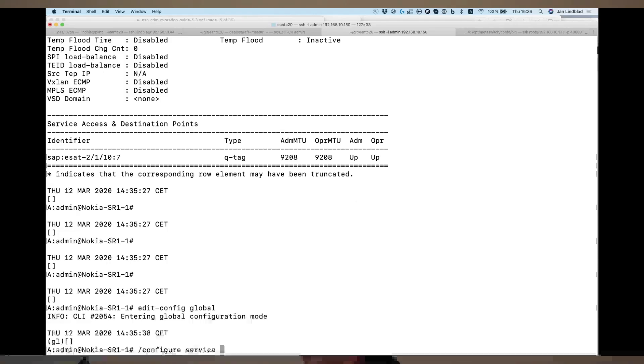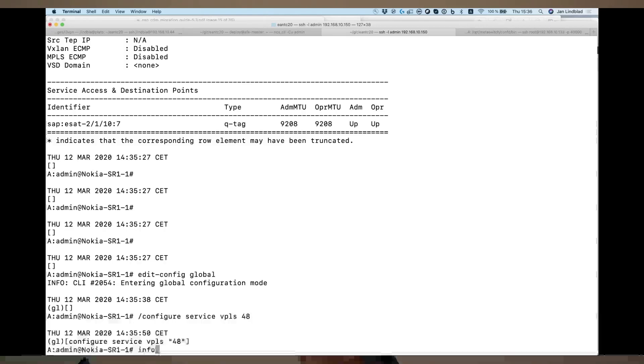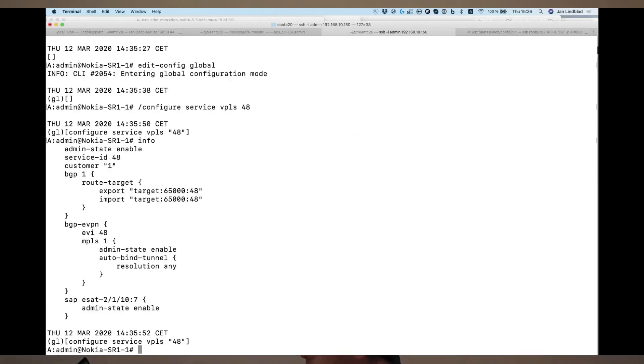And we can see the configuration that has been provided matches that that we anticipated on the controller. So, configure service, EPLS 48. And the configuration here now exists and matches that that you saw in the dry run.